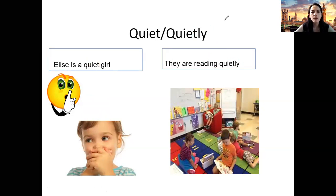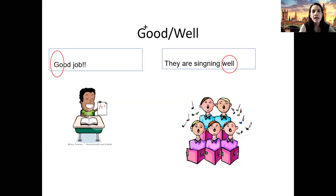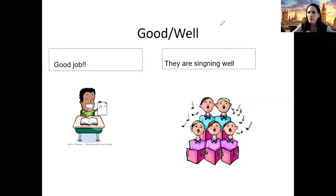Our last example: good and well. Good is the adjective — good job. And well is the adverb — they are singing well. How are they singing? Well. In this case we do not say 'goodly' — that's incorrect. We use 'well' for adverbs. You are extremely intelligent, and we are going to solve an exercise together to see if you understood.